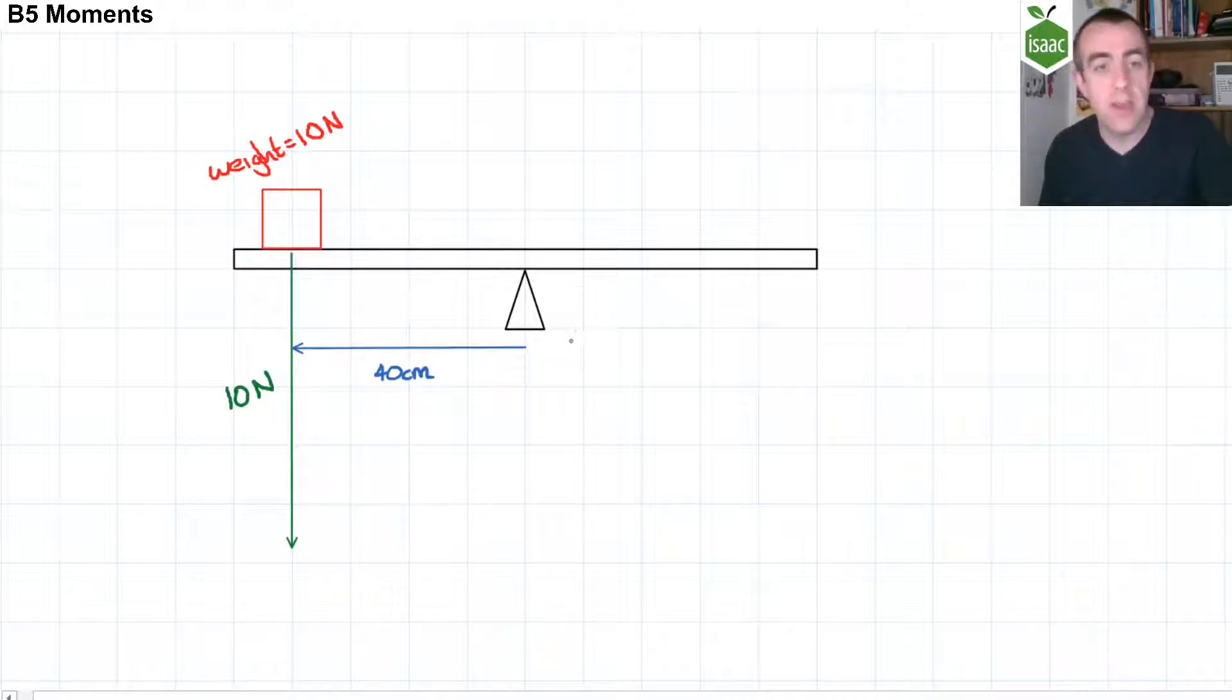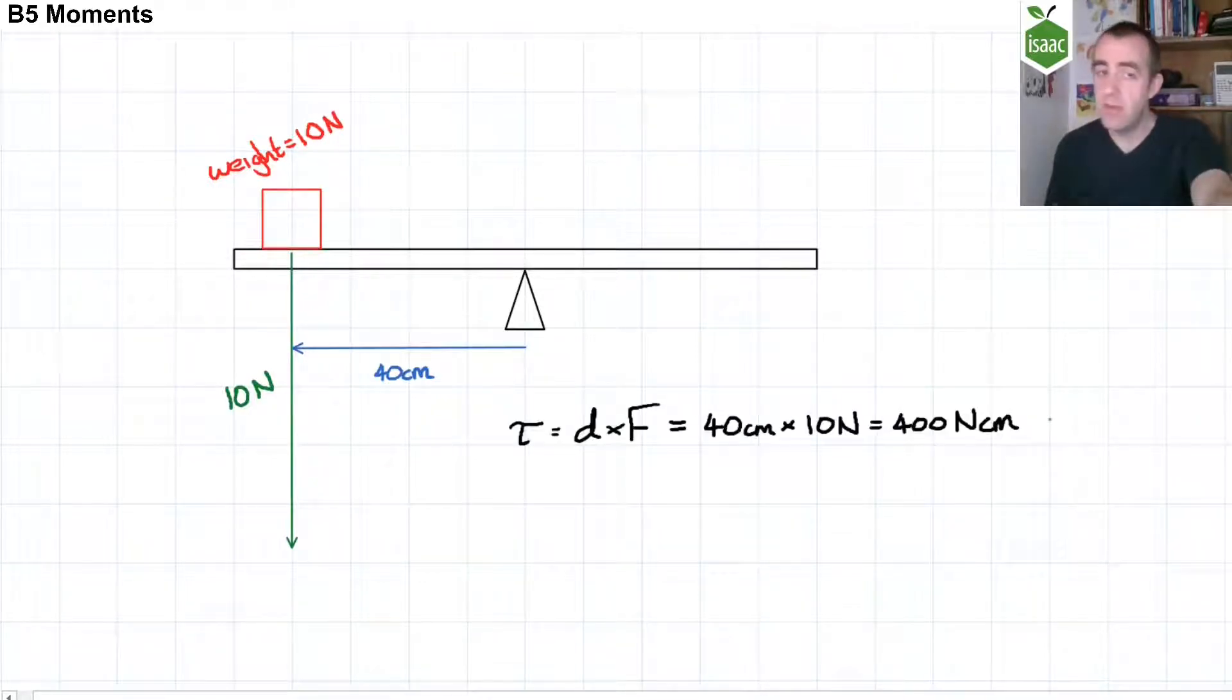In this case, the force is acting 40 centimetres to the left of the pivot and trying to produce anti-clockwise rotation. The moment of that force, which I've represented here with the Greek letter tau, can be calculated as the product of the perpendicular displacement between the pivot and the line of action of the force.